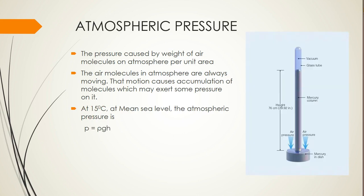Atmospheric pressure can be measured with the help of a barometer. The barometer has a glass tube which is open at one end and closed at the other. Initially it is completely filled with mercury and then inverted into a mercury dish. After that, some mercury drops and then stops due to atmospheric pressure.